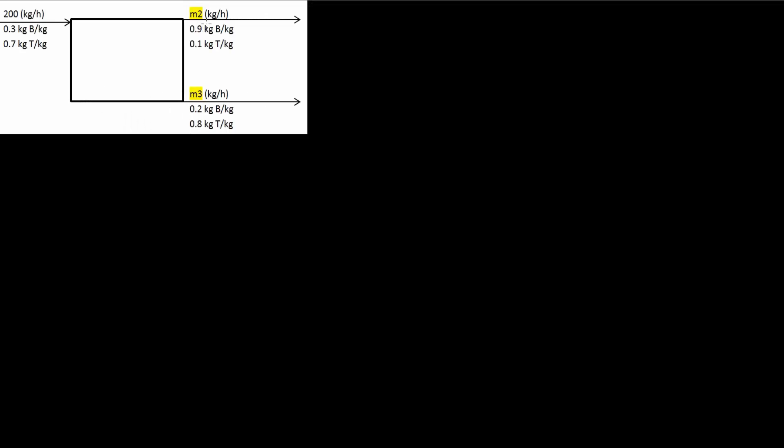We're going to want to solve for M2 and M3, and we will first do a degree of freedom calculation just to prove that we can actually solve this problem. So, degree of freedom. We first need to know how many unknowns do we have. We have two: M2 and M3.